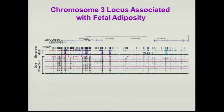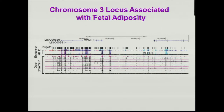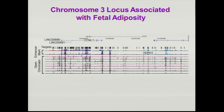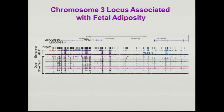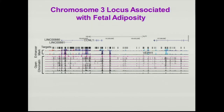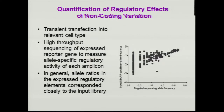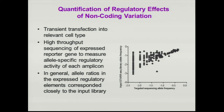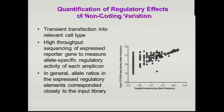We've recently gotten the sequence data from our locus on chromosome 10, but this approach has been tested on a related trait — fetal adiposity — which is related to maternal glucose metabolism. There's a locus on chromosome 3 we've been studying. Using ENCODE data, Tim sequenced across this region, choosing targets based upon areas of open chromatin to look for variants. Fragments about 450 to 500 base pairs in length were cloned into the STAR-Seq vector and transfected into cells, allowing high-throughput sequencing of the expressed reporter gene to measure allele-specific regulatory activity of each amplicon.